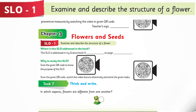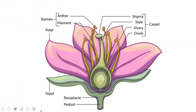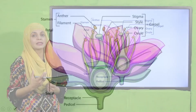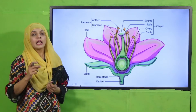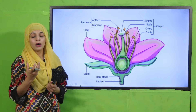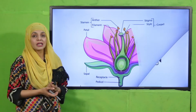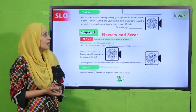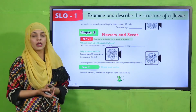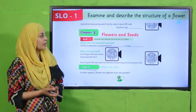My dear students, according to this SLO and its purpose, you have a picture of a flower structure. This will help us understand the concept of the parts of a flower and the different functions they perform.